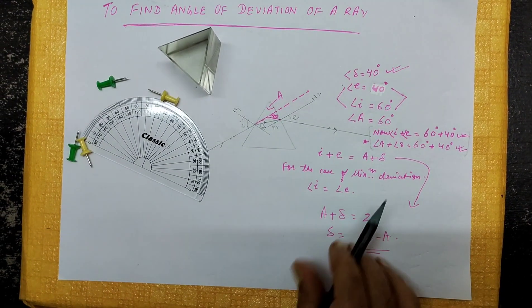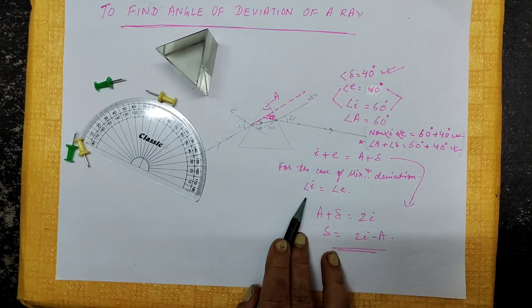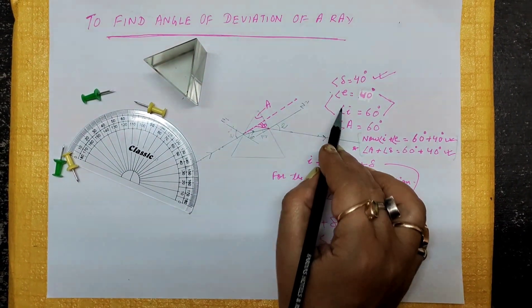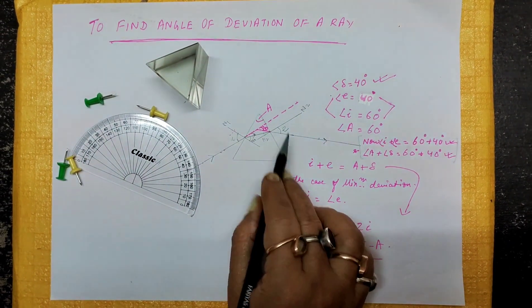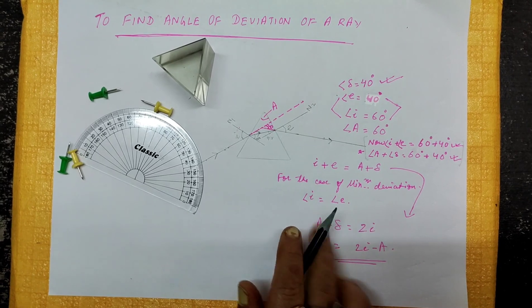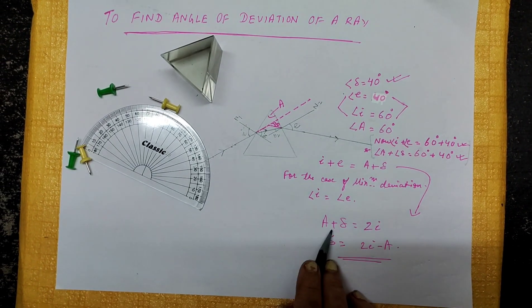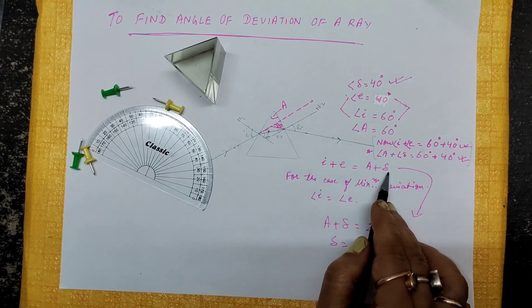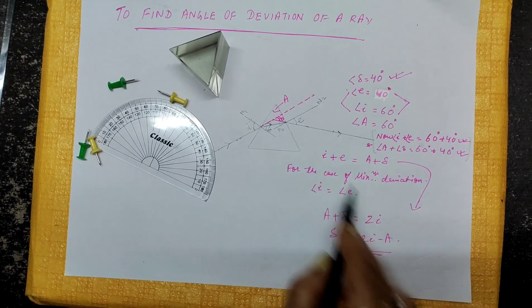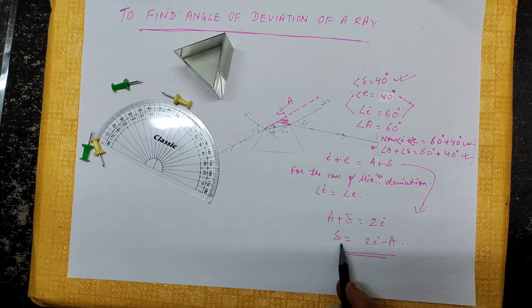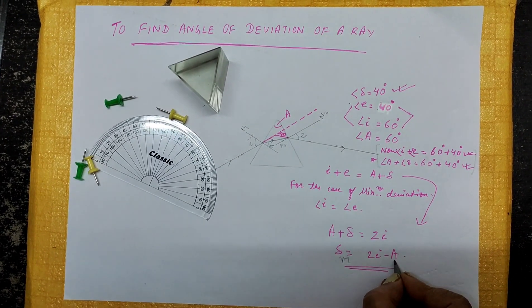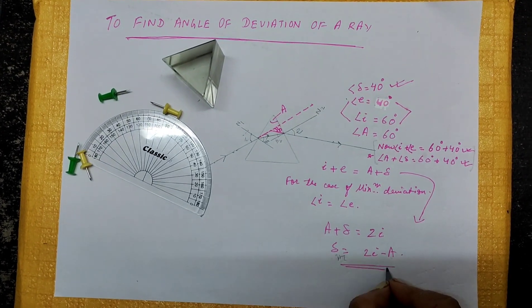For the case of minimum deviation, there is a condition that angle I should be equal to angle E. Here we see that angle I is not equal to angle E, so this is not the condition for minimum deviation. For minimum deviation, angle I equals angle E, and since I + E = A + delta, when I = E, then A + delta becomes 2I. So delta minimum (δM) = 2I − A. This is the condition for minimum deviation.